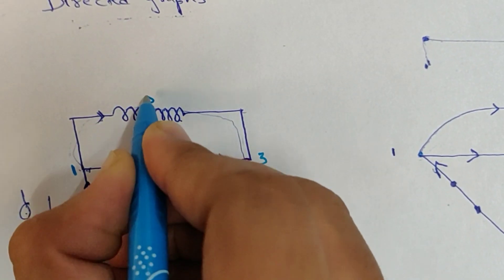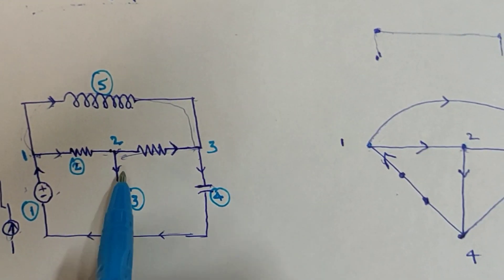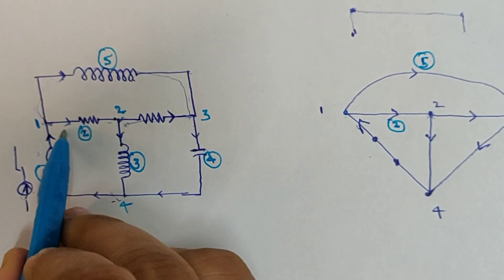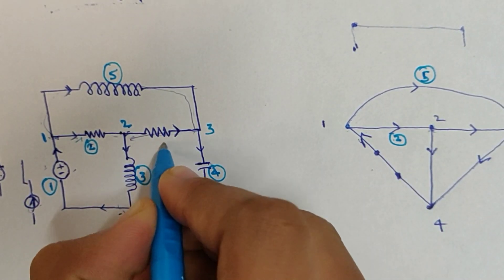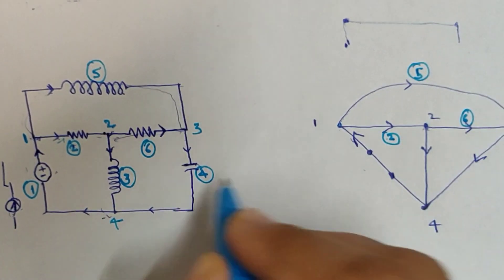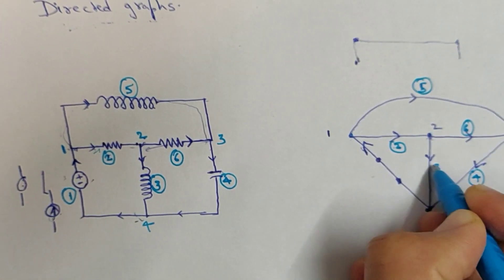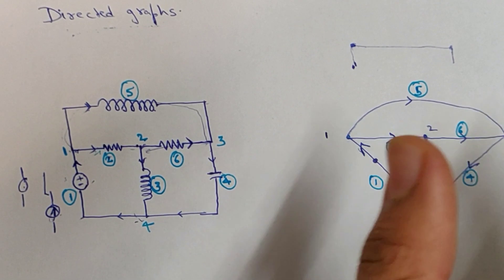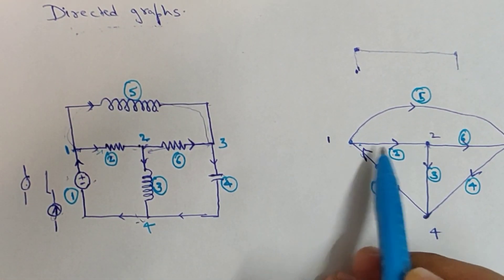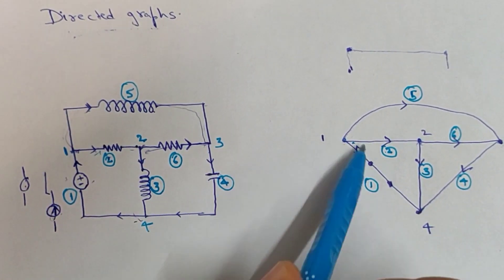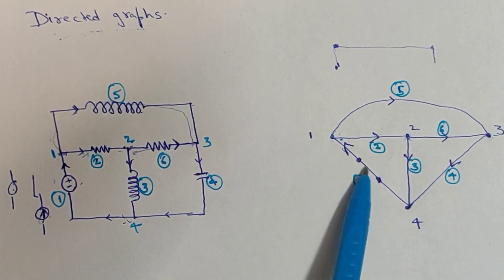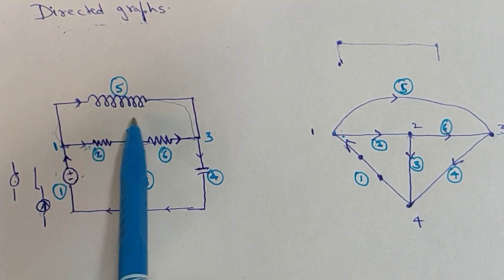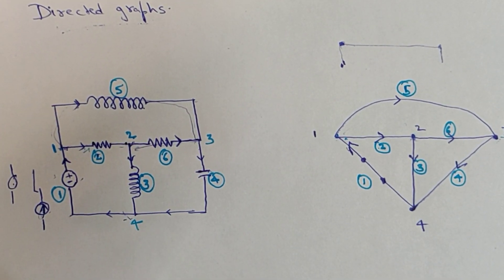We name the branches one through six. The fifth branch, the second branch, the sixth branch, the fourth branch, and the third branch are all labeled. This is the directed graph for this network. To summarize: plot all nodes as points, represent all internal impedances as lines, represent voltage sources as short circuits and current sources as open circuits, then add arrows in the direction of current for the directed graph.